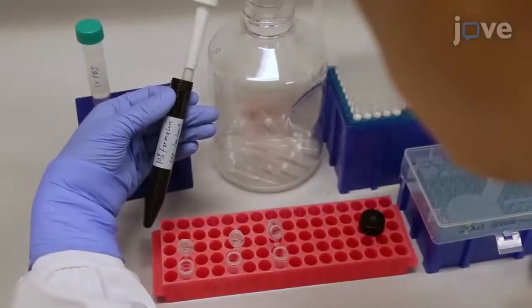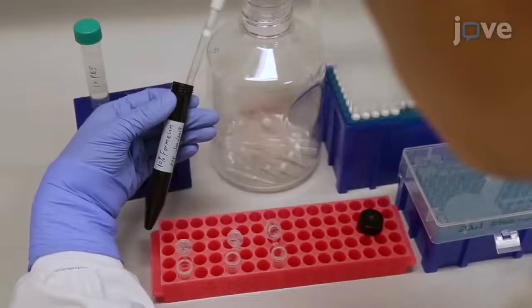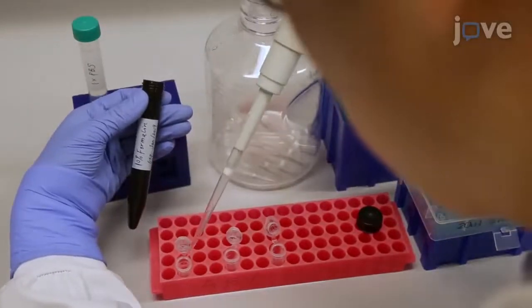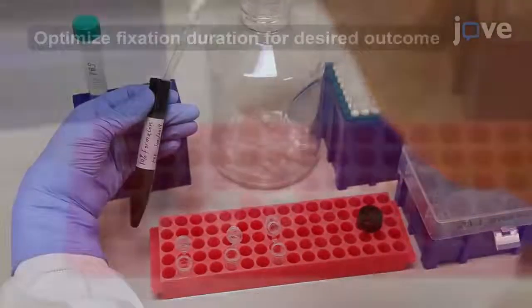Next, add 500 microliters of either 10% formalin solution or 4% freshly made paraformaldehyde. Let the sample fix at room temperature for 30 minutes.